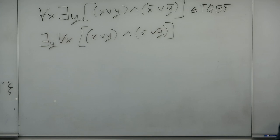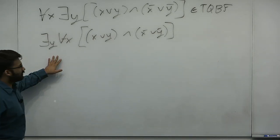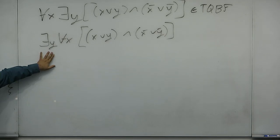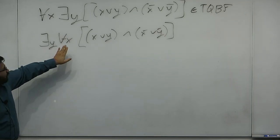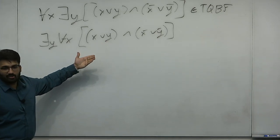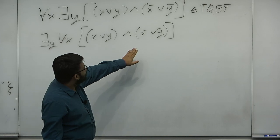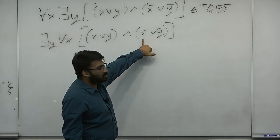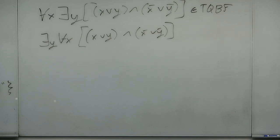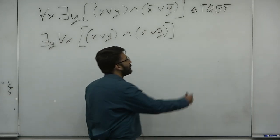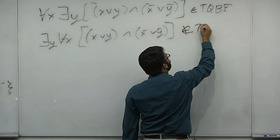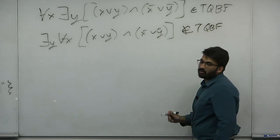The second — exists Y, for all X — asks: is there a single Y that works for every X? Try Y equals 0: you can choose X to be 0 and it fails. Try Y equals 1: this becomes 0, so choose X to be 1 and it fails too. So this one is not in TQBF. The permutation of quantifiers definitively affects the truth value.